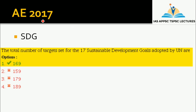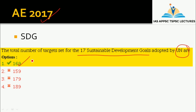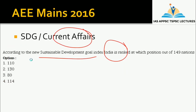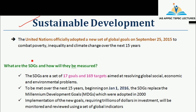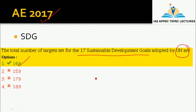Next, here is a 2017 question: The total number of targets set for 17 Sustainable Development Goals adopted by UN. This is a direct question from the Sustainable Development chapter, and in this chapter we will be able to get exactly the same type of data.